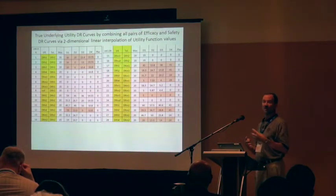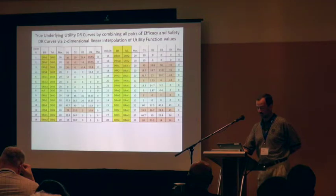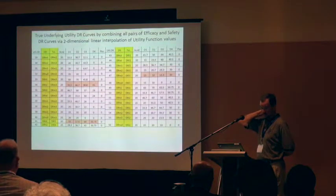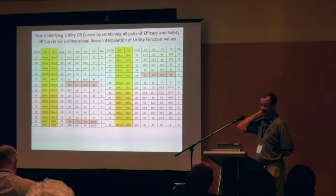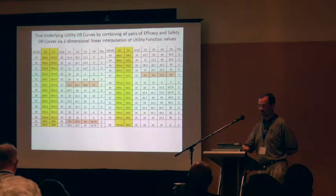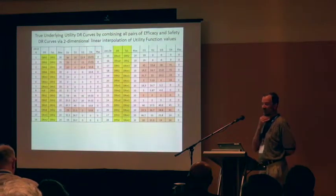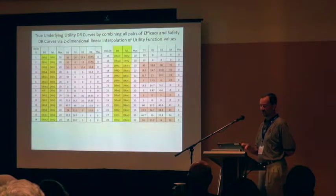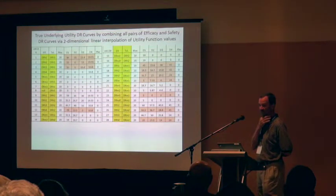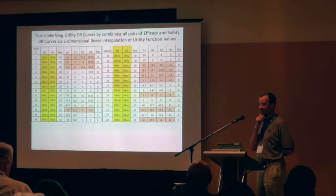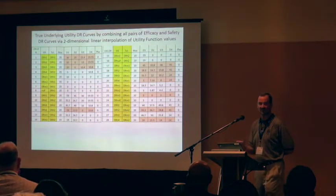Combining all possible combinations of those curves yielded 56 possible combinations to define the clinical utility functions. Rather than run all 56, we picked the highlighted clinical utility curves because many of them were generally similar. We picked 14 highlighted curves to simulate the adaptive design because they're generally representative of the spectrum of possibilities.